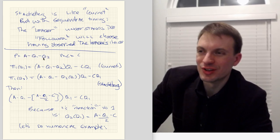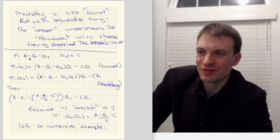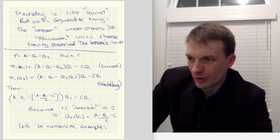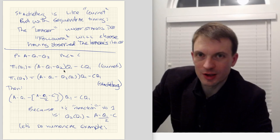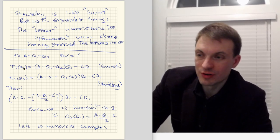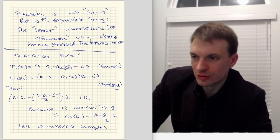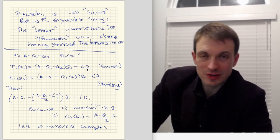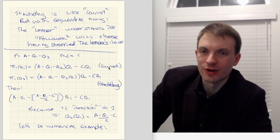If Q1 and Q2 sum up to something larger than A, then the price would be negative, which is bad. So let's write down Firm 1's profit function as a function of their quantity selection: (A minus Q1 minus Q2) times Q1, minus C times Q1. This would be the Cournot profit function.